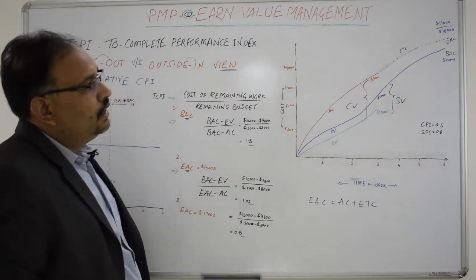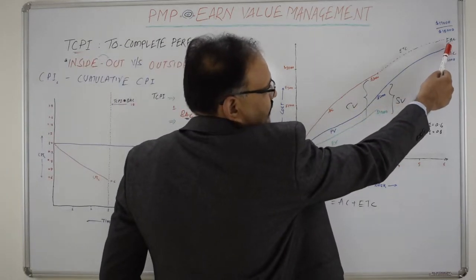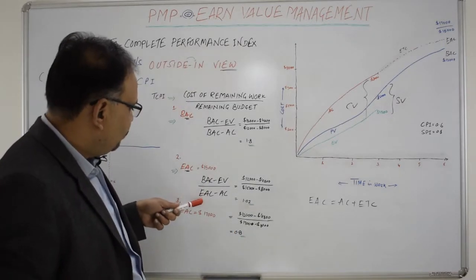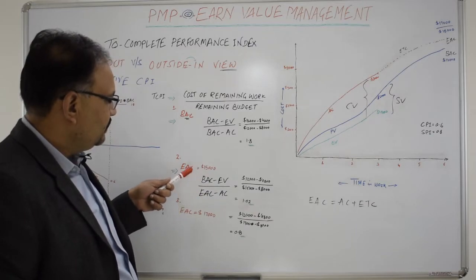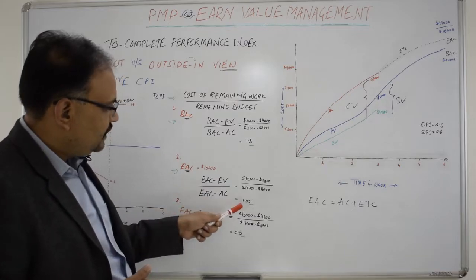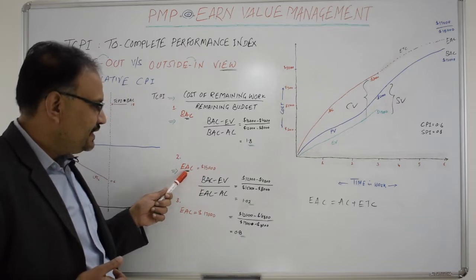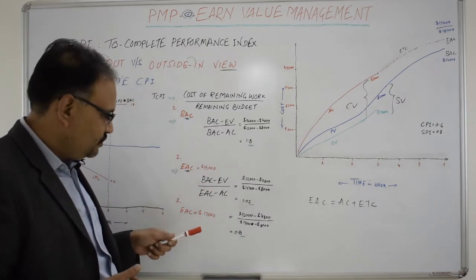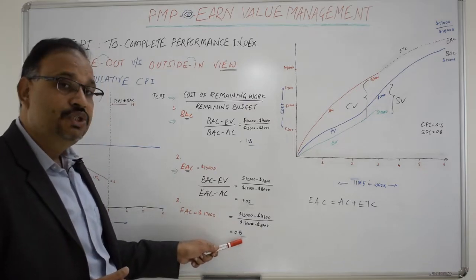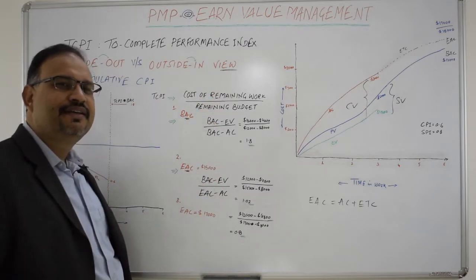If the BAC is revised to an EAC of $15,000, the formula changes to (BAC minus EV) divided by (EAC minus AC) — the only difference being EAC replaces BAC in the denominator since we're now considering a revised budget. The TCPI in this case comes out to 1.02. If the EAC is further increased by $2,000 to $17,000, the TCPI comes out to 0.8. These three scenarios illustrate the calculation aspect of TCPI.